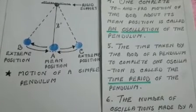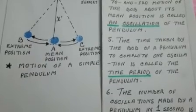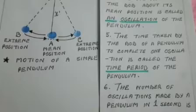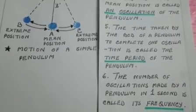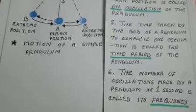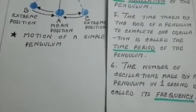The time taken by the bob of a pendulum to complete one oscillation is called the time period of the pendulum. In the figure, the time taken by the bob of the pendulum to travel from B to C and back to B is called the time period of the pendulum.